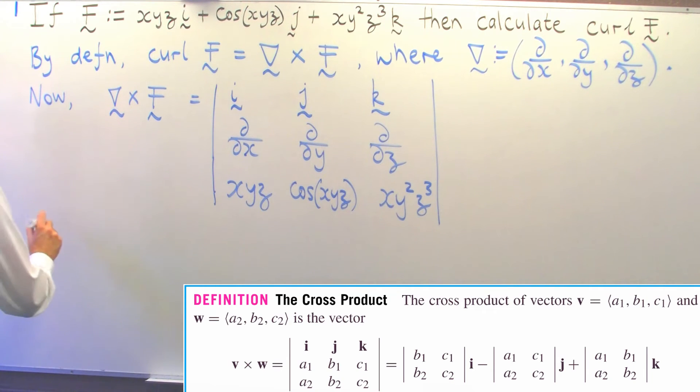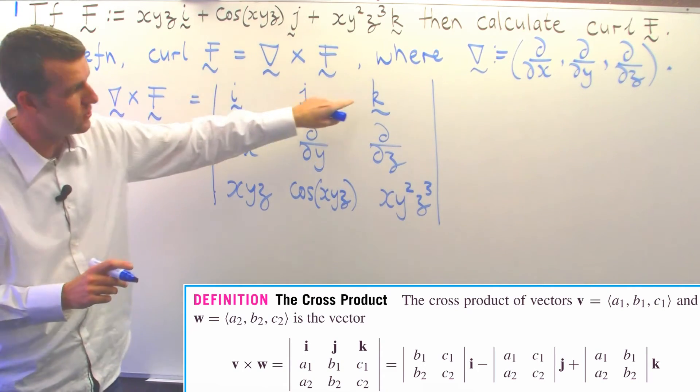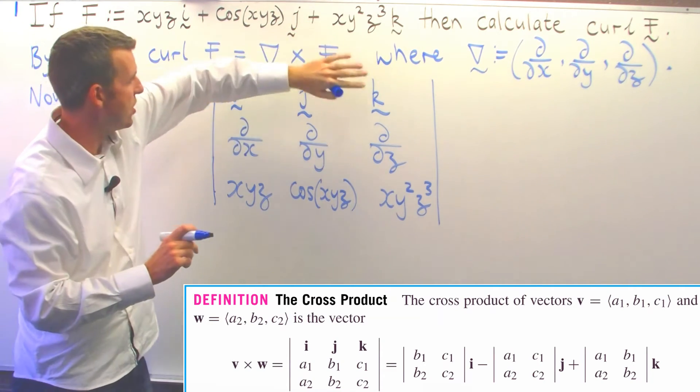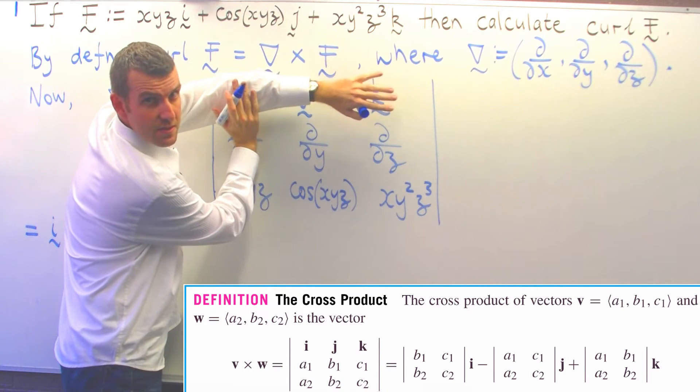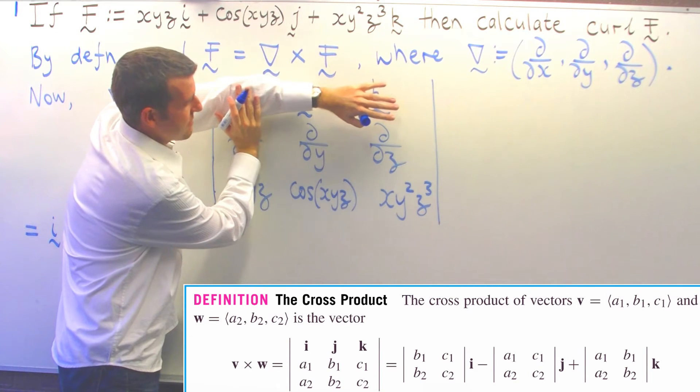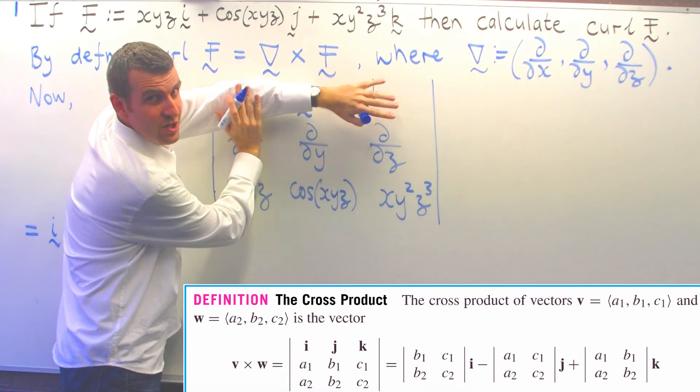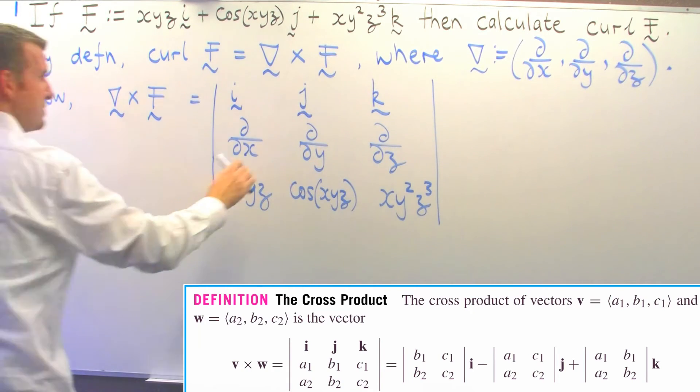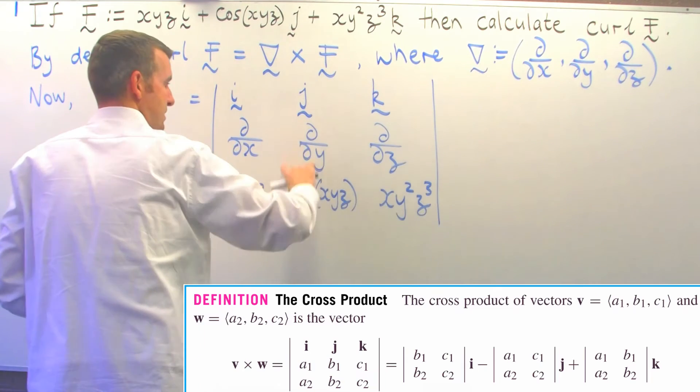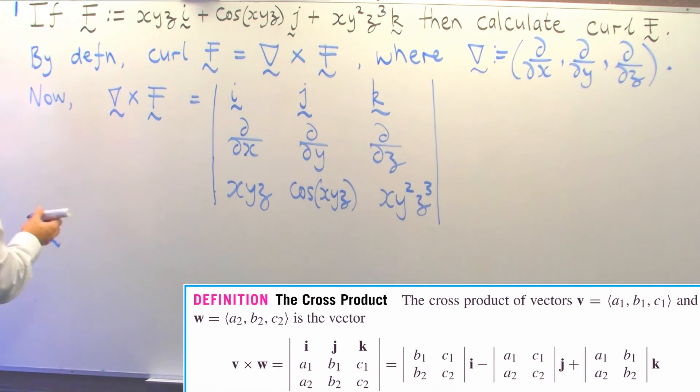To do this, I expand along the top row. I recognize that i is in the top row and the first column, so I cover that row and that column up, and I multiply by the determinant of what's left over. So i will be multiplied by the determinant of this two by two expression.